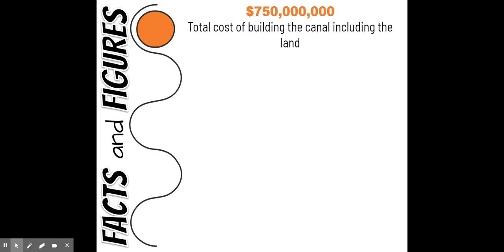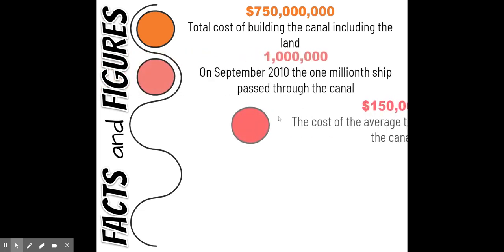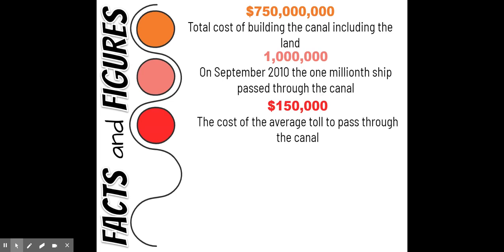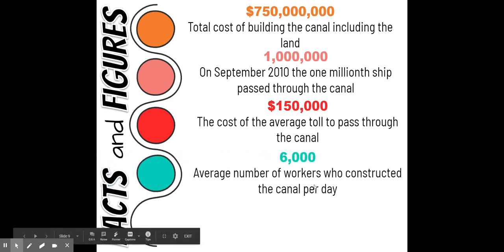Let's look at some facts and figures. The cost was $750 million in 1914 money — incredibly expensive, but worth it. The average toll passing through the canal is $150,000, dependent on weight and size of the ship. In September 2010, the one-millionth ship passed through. It created jobs for Panamanians and Caribbean and South American workers — on average 6,000 workers constructed the canal per day — and was a big moneymaker for America through most of the 20th century.